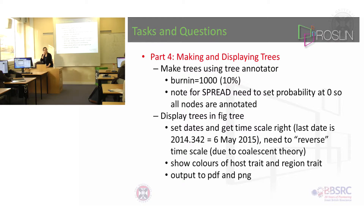The important thing to notice is what the last date is, because you have to set that in FigTree. This date here is 2014.342, which is actually the 6th of May. And because of coalescent theory, to make it display properly in FigTree, you have to reverse the timescales, and I will show you how you do that.